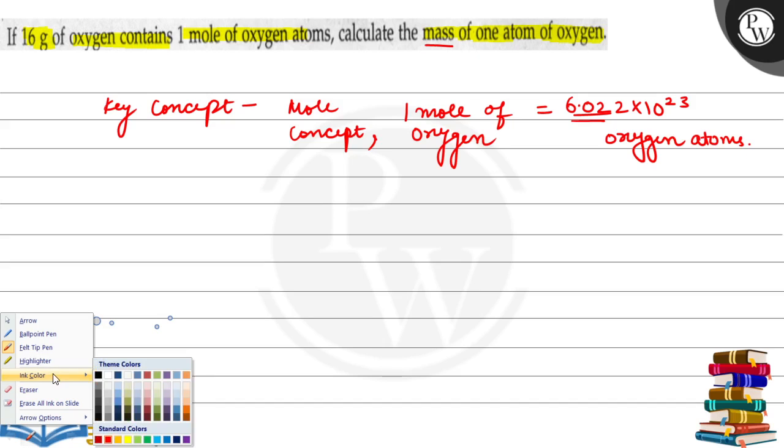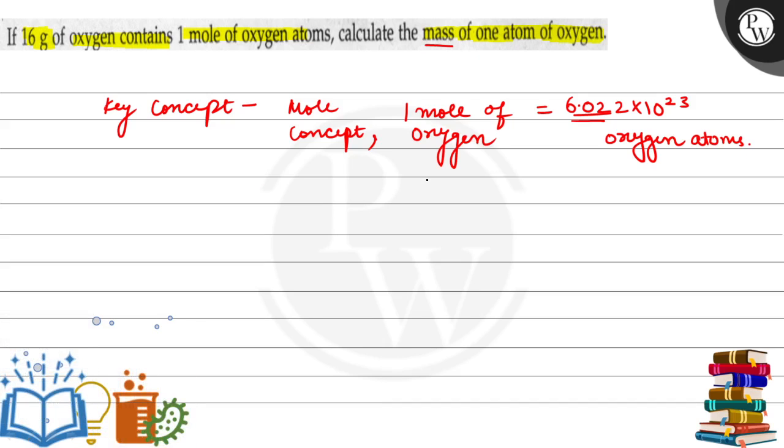For that we will simply divide this given mass of oxygen with the Avogadro's number. That is, given that mass of 1 mole of oxygen is 16 grams.